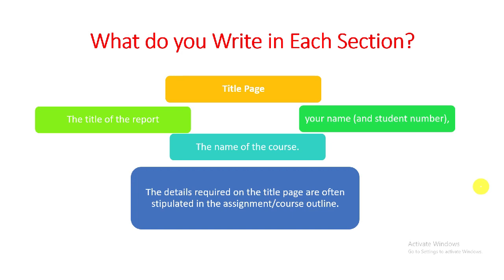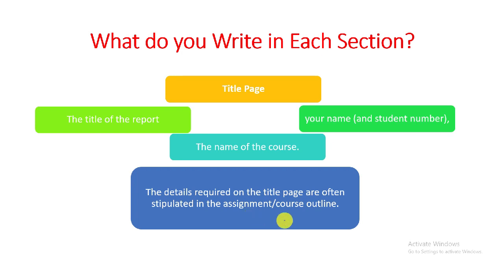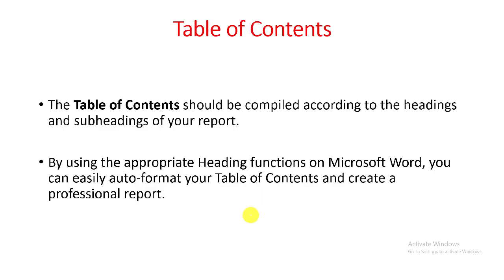So what do you write in each section? In the title page, for example, you need the title of the report, your name, and the name of the course. The details required on the title page are often stipulated in the assignment or course outline. As part of an assignment, you would state this report is compiled and prepared for the assignment in linguistics, for example.